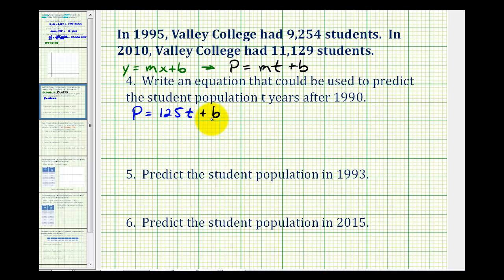Now we're left to determine the y-intercept. But there's one more thing we need to be careful about here. Notice how they want an equation to predict the student population t years after 1990. So if we want to represent the given data as sets of ordered pairs, the coordinates for the year 1995 would actually be five comma 9,254, since 1995 is five years after 1990.